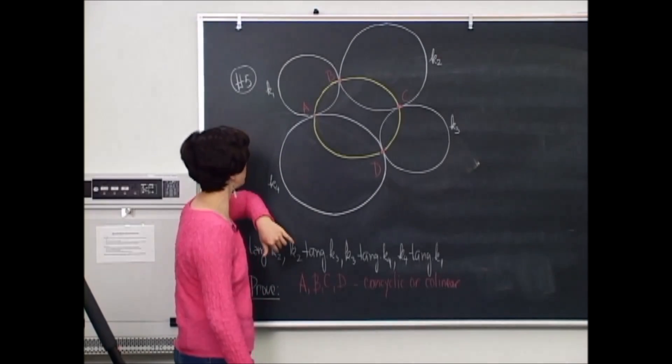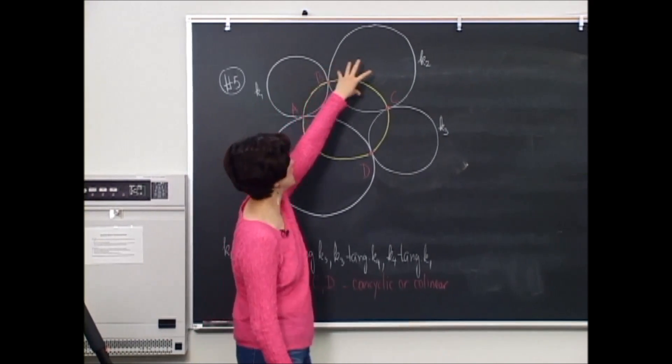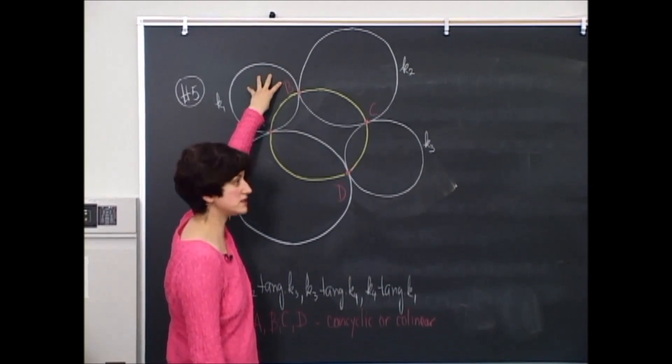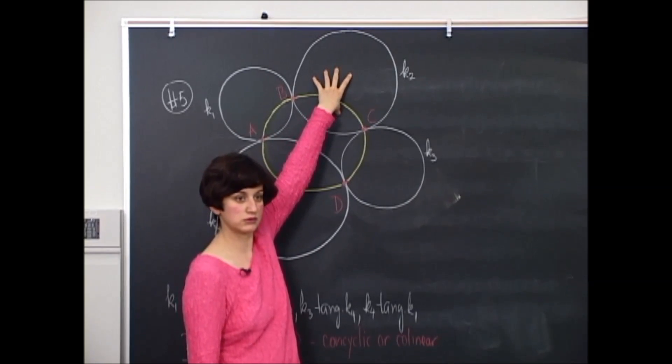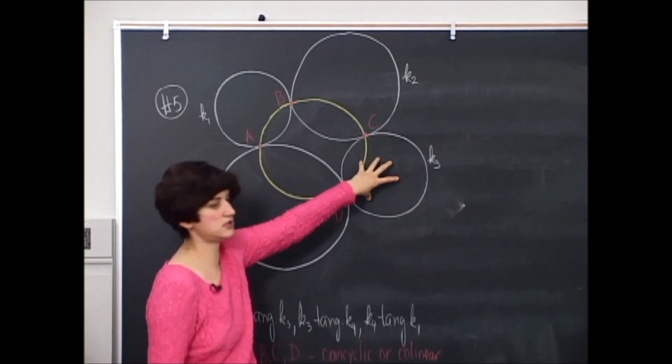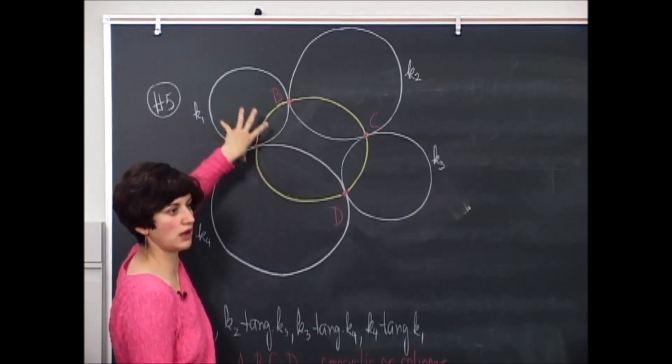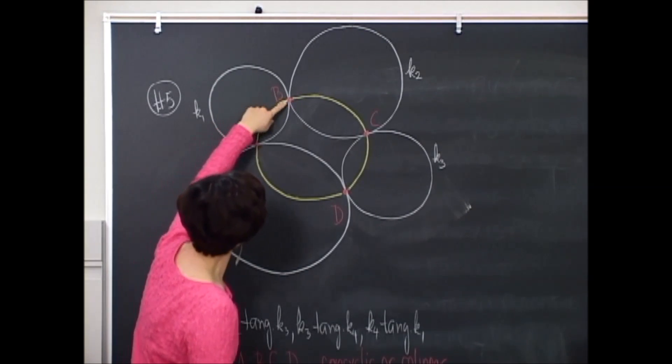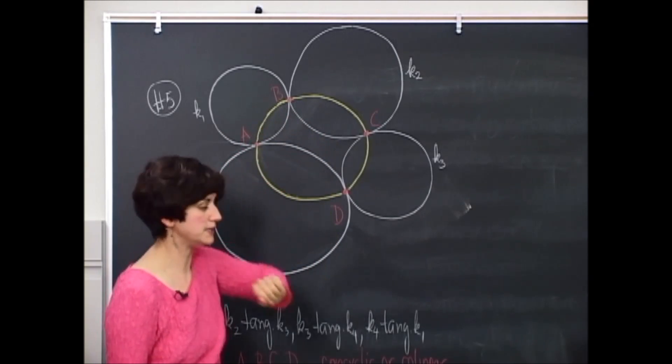So basically, what do we have? The white circles are tangent to each other as you go around. So k1 is tangent to k2, it's tangent to k3, it's tangent to k4, it's tangent to k1. And the points of tangency are the red points A, B, C, and D.